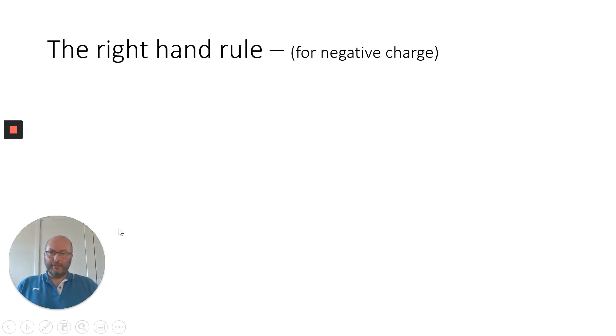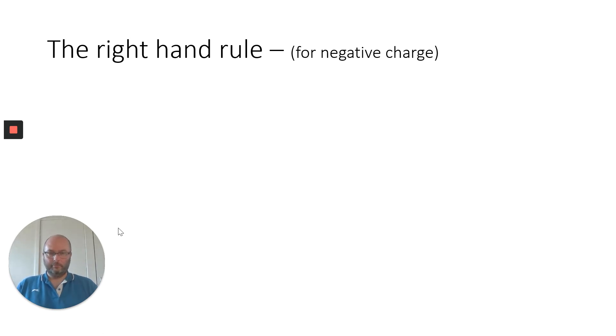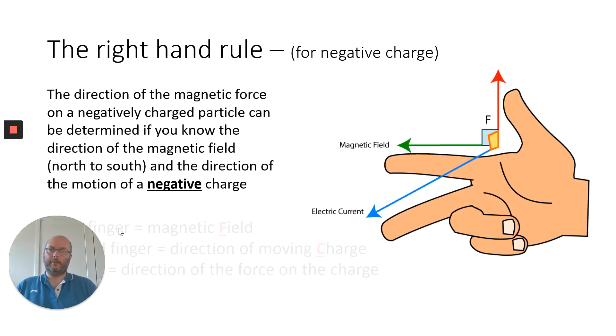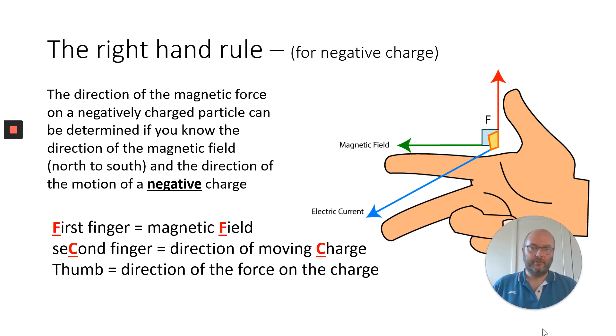Magnetic fields are a little bit weird in that we need to be able to look at how the field deflects a charge. And to do that we're going to use hand rules and we're going to have to use two of them. We're going to have one for your left hand, one for your right hand depending on the charge.